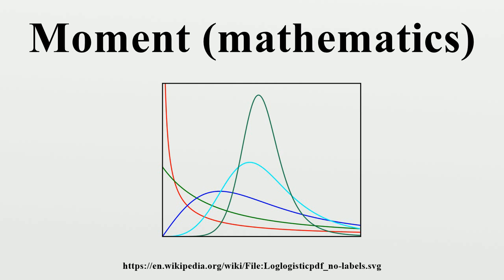A distribution that is skewed to the left will have a negative skewness. A distribution that is skewed to the right will have a positive skewness.